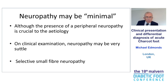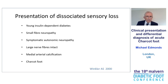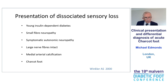The neuropathy may be so-called minimal. Although the presence of peripheral neuropathy is crucial to the etiology, on clinical examination neuropathy may be very subtle, and there may be only a selective small fibre neuropathy with inability to feel cold or hot. But light touch may be normal, and vibration may be normal. One should be aware of this dissociated sensory loss in young insulin-dependent diabetics who have a small fibre neuropathy with symptomatic autonomic neuropathy, but large nerve fibres are intact.